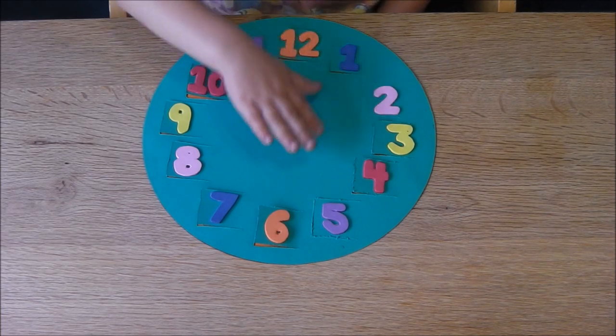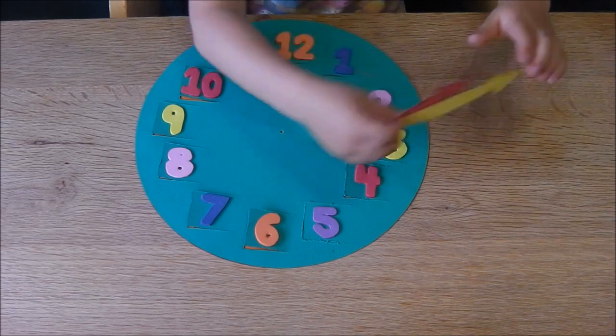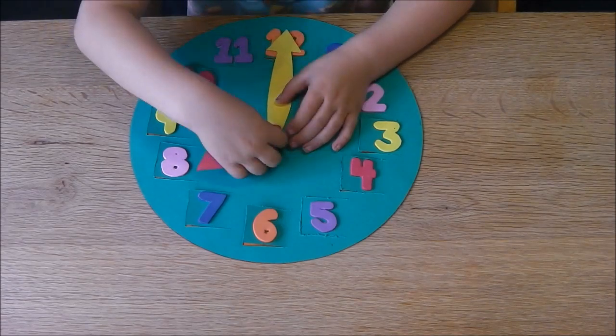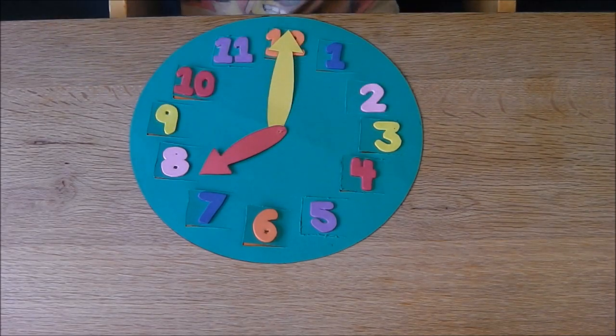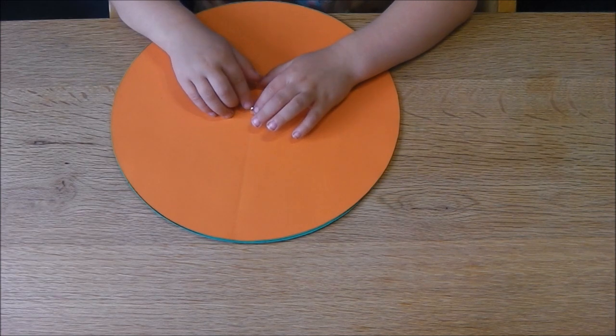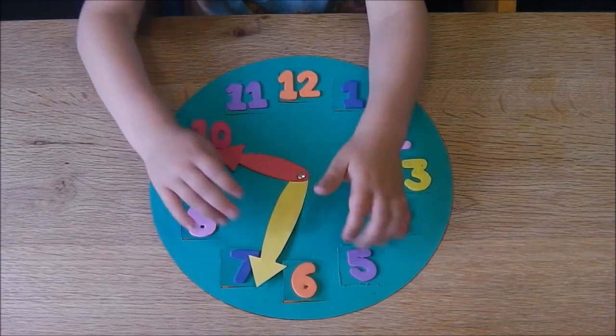Now you can put your hands on. Not these hands, these hands. Put a bigger one on first, put a smaller one on top, and then stick the pin through. Spread the split pin apart like that. And now we have your clock.